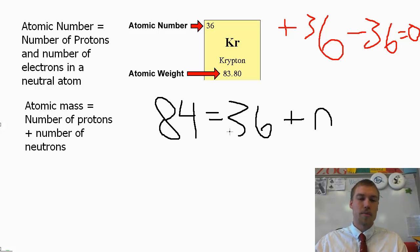So we've set up our equation. Now we just have to solve for that. So it's going to be 84 minus 36. That's going to be 48 is equal to the number of neutrons.